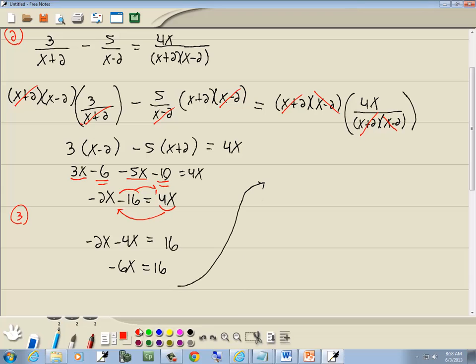And step 4, divide both sides by the number in front of your x. Well, the number in front of our x is a negative 6, so we're going to divide both sides by negative 6. And we've got x is equal to negative 16 over 6. Both those are divisible by 2, so that gives us negative 8 thirds. So our answer is negative 8 thirds.